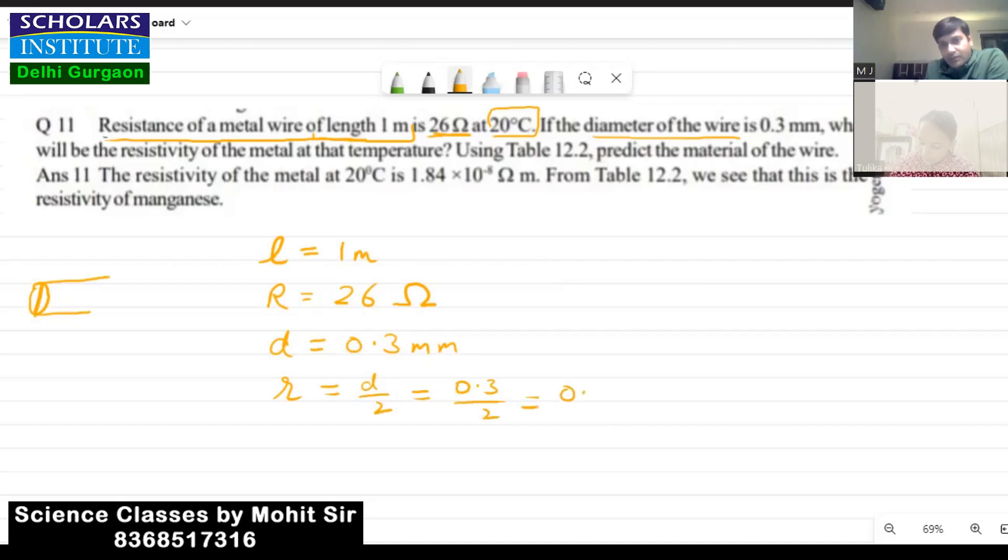Which will be 0.15 mm, okay. Since mm is not the SI unit, we will have to convert it into SI unit. For that we need to divide it by thousand.